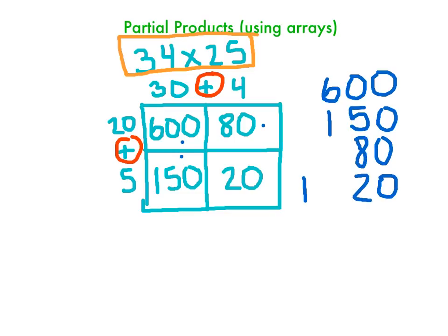Ideally, what you want to get to is you can do this in your head. Once you get these partial products, it should be relatively easy to add them up. But if you need to write out the number sentence out to the right, that's fine.